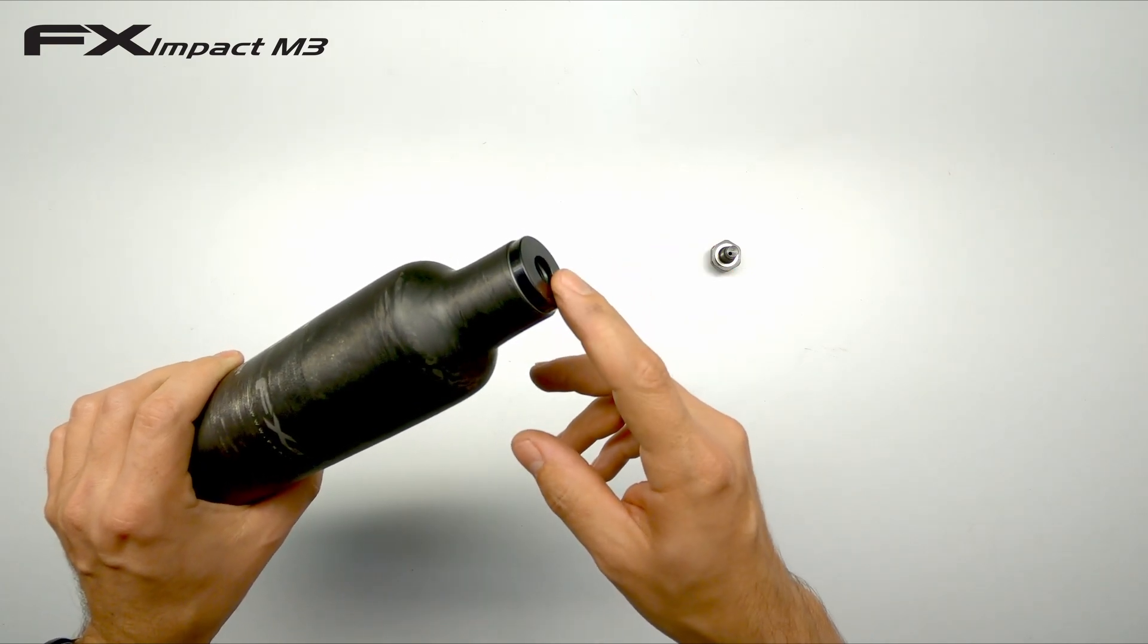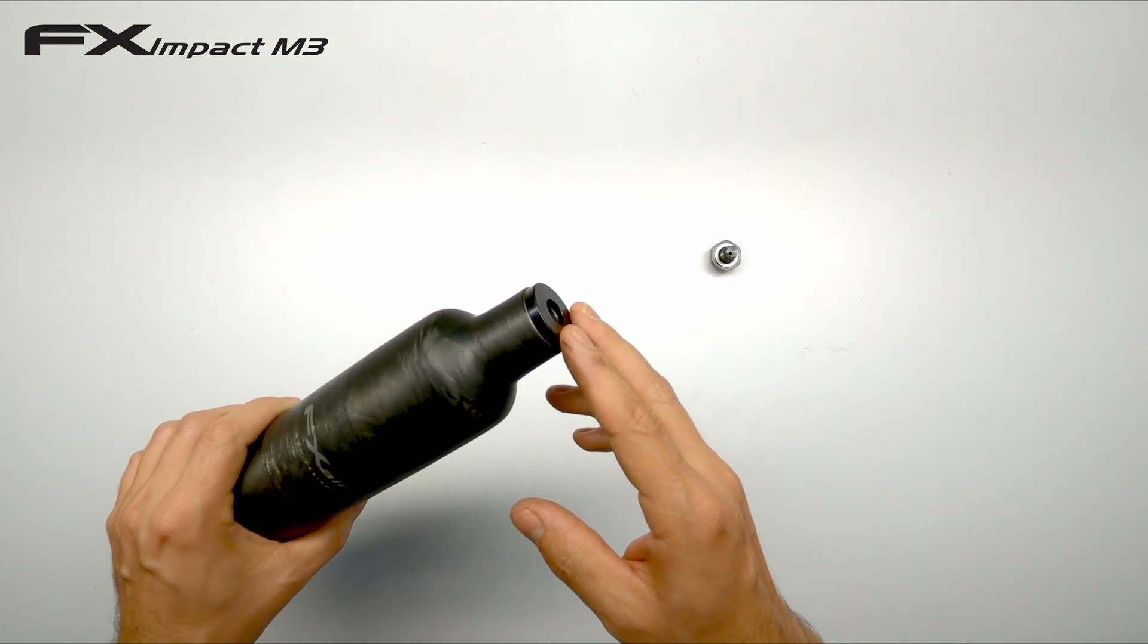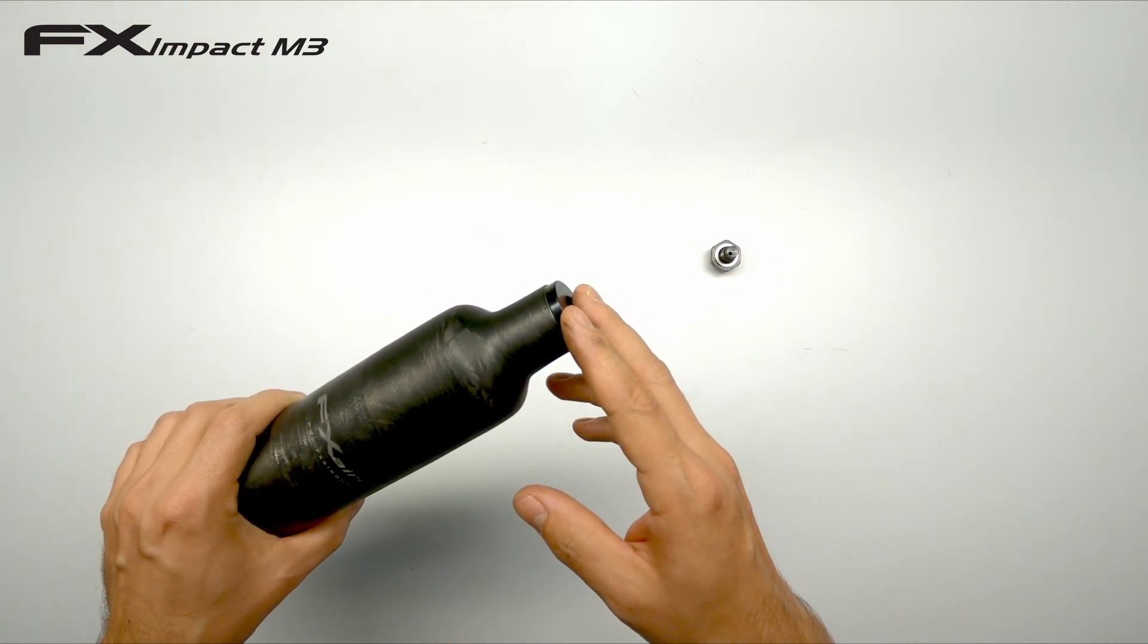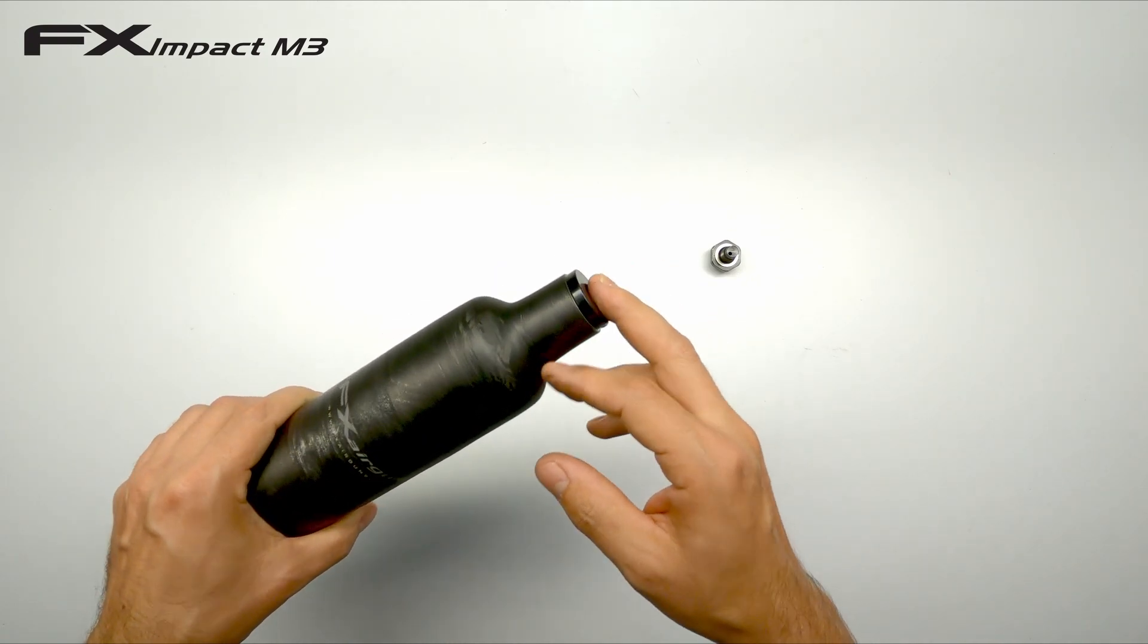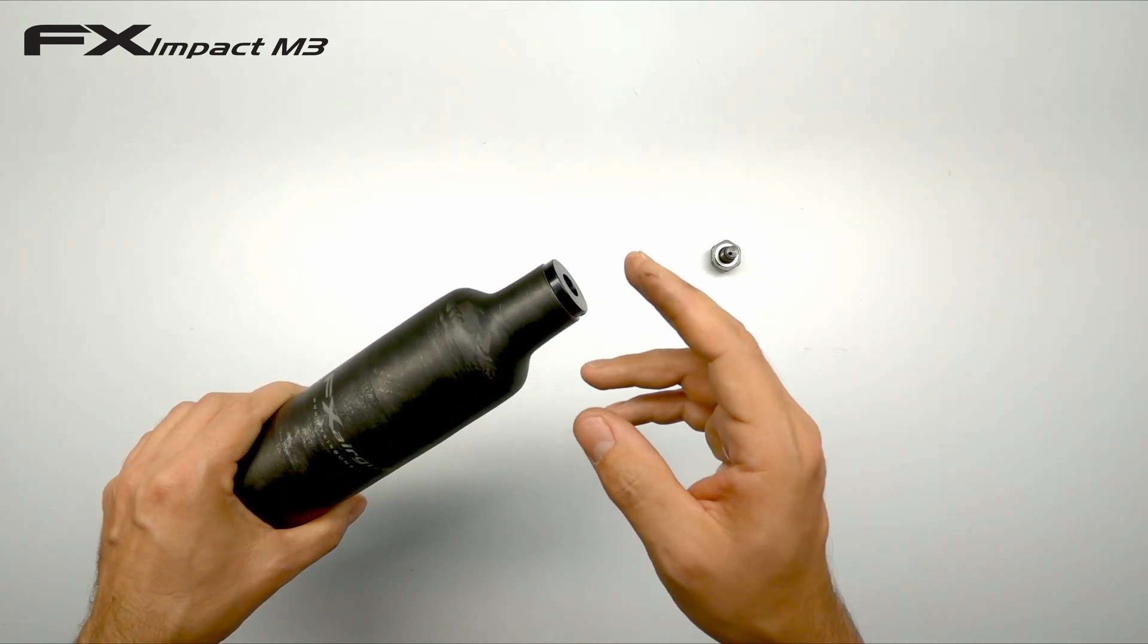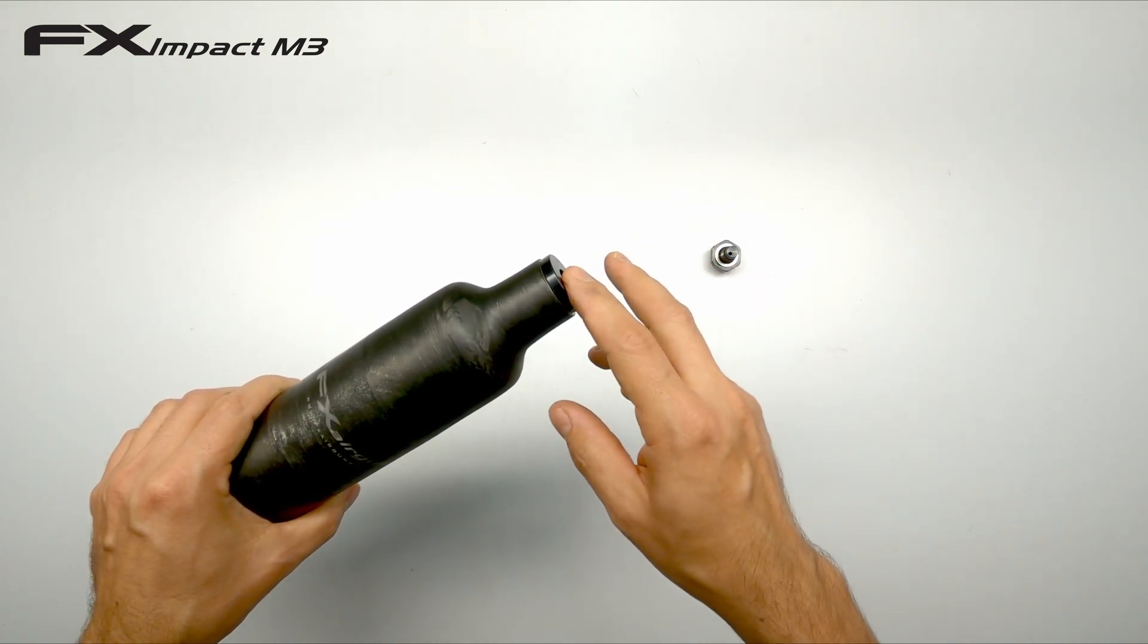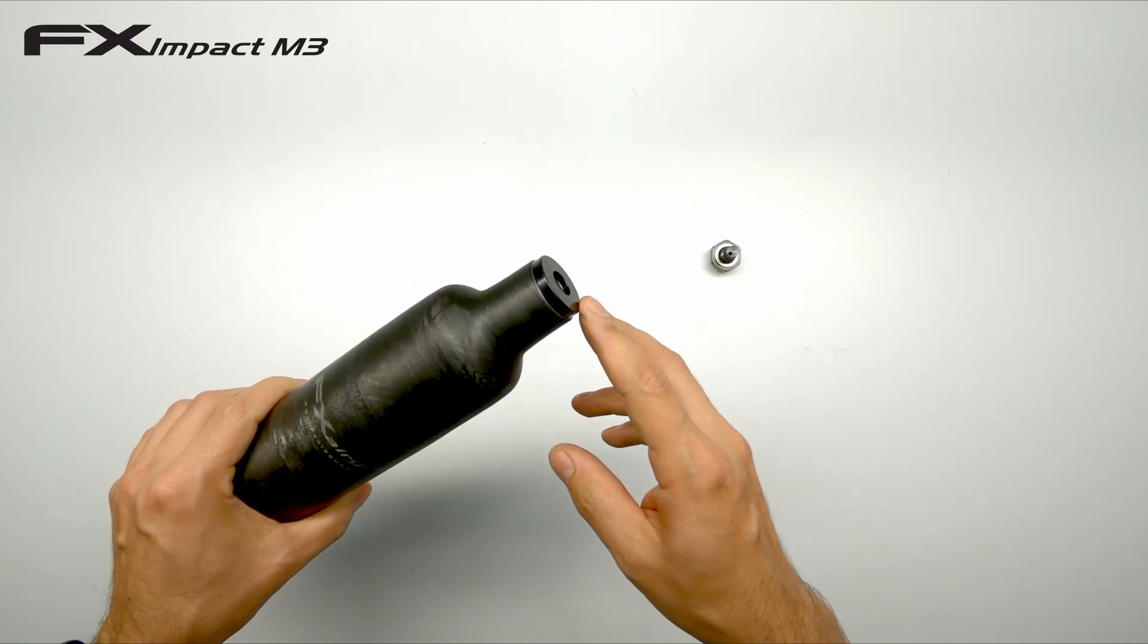Now before we continue some of these valves will be glued in with Loctite from the factory and will be hard to remove. So with some force and some effort you will be able to break the glue loose. Don't heat it up as it's not good for the carbon fiber. So just use some force and a decent tool and it should work out. I'll quickly go crack my valve loose and then we can have a closer look at the two valves side by side.